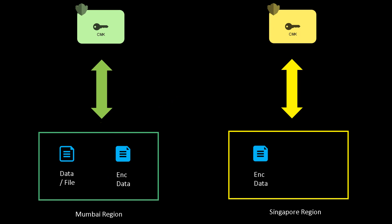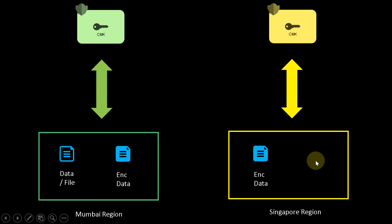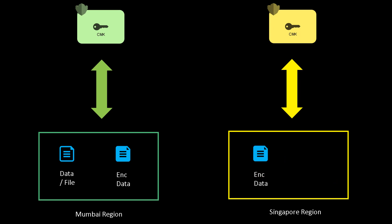Previously there was no way to do that. The only way was to decrypt the file in Mumbai, encrypt the file with the Singapore key, and then send that key over to the Singapore region. Then in the Singapore region you can have that file decrypted or kept encrypted with the key within the Singapore region.